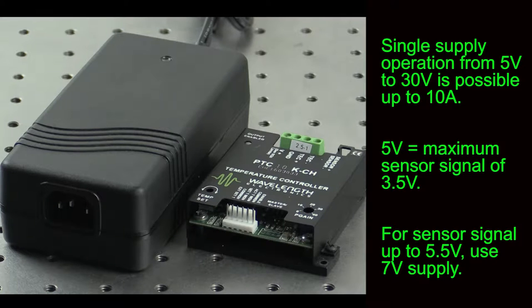At 5 volts in, the maximum sensor signal can be 3.5 volts. To increase sensor range up to 5.5 volts, use a minimum of 7 volts in.